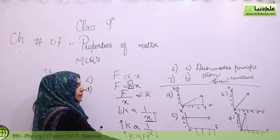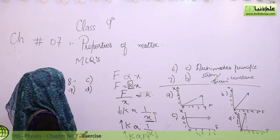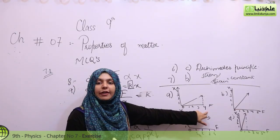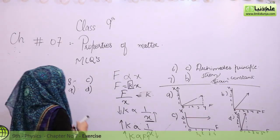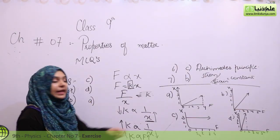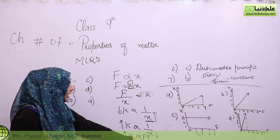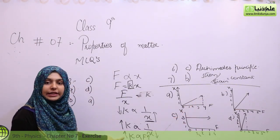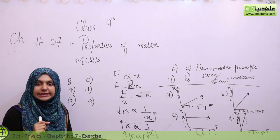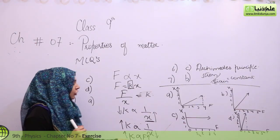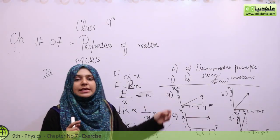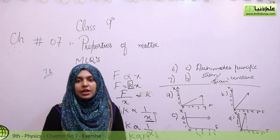In our case, graph A shows the highest force value. So the answer to Question 10 is A — graph A gives the largest spring constant. To increase K, we increase force F, and graph A has the most F value, meaning the spring constant K will be the largest. These are the MCQs for Chapter 7.